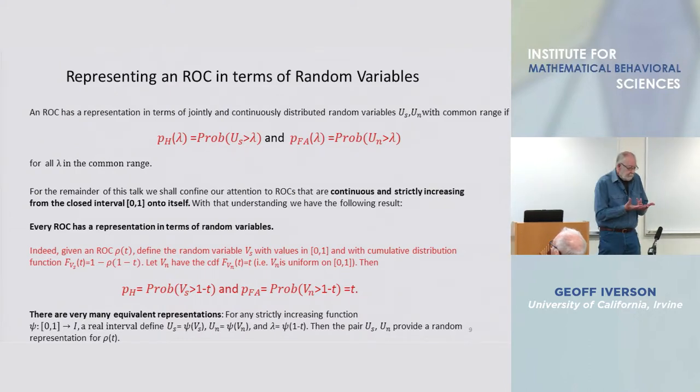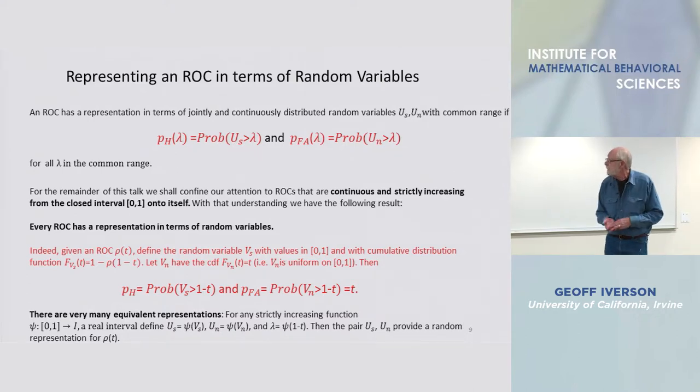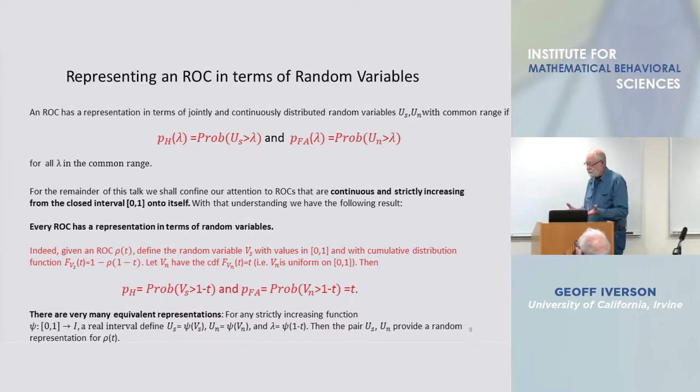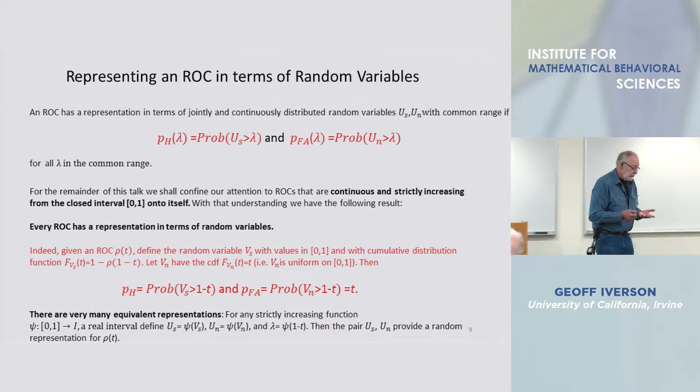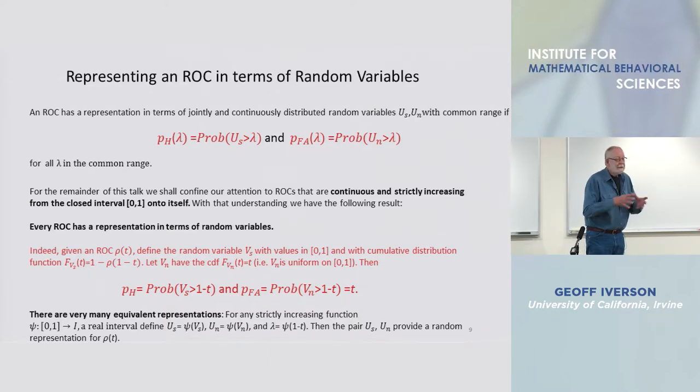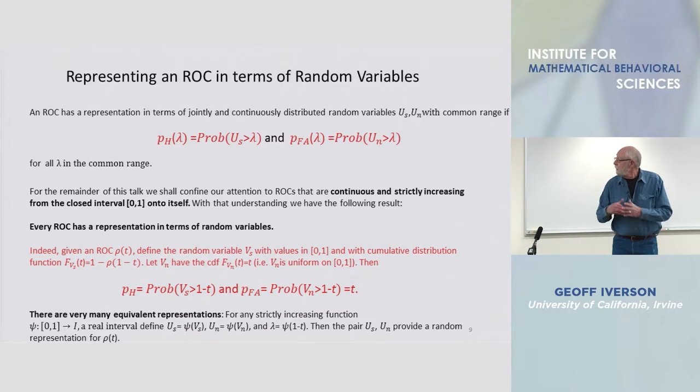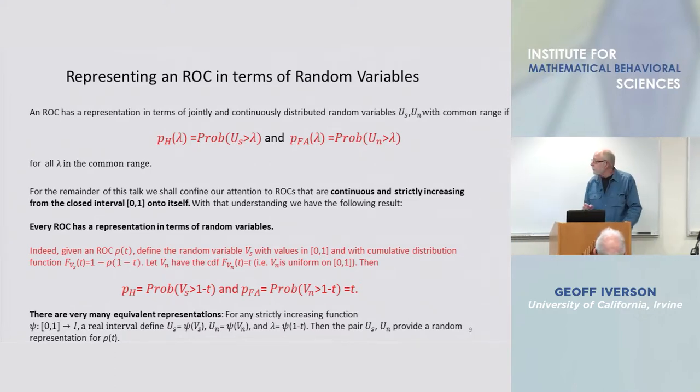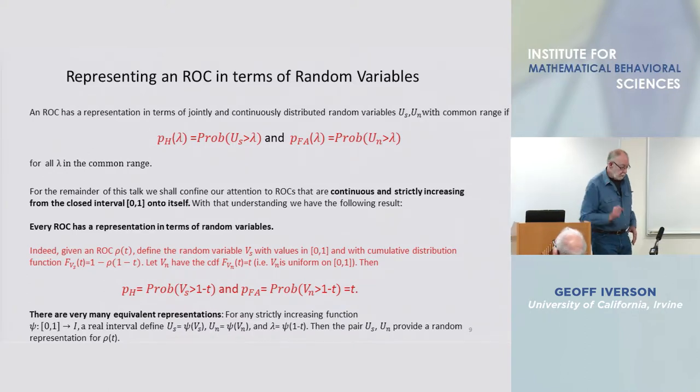The first result, which is actually very easy to obtain, is that every ROC, at least ROCs within a fairly large class, they are strictly increasing continuous functions of the unit interval onto itself. They are homeomorphisms of zero one.